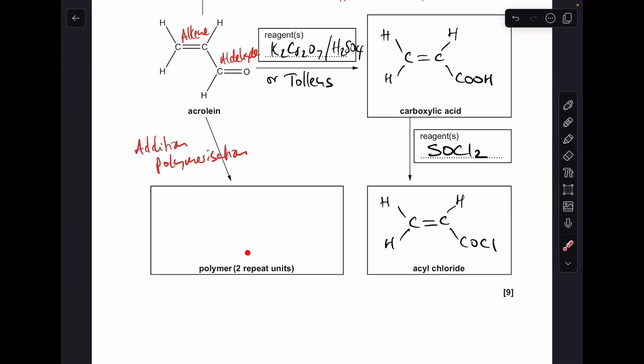And now finishing with this conversion here. Acrolein to the polymer shown, two repeat units. You'll notice I've written up addition polymerization. And that's because we've got the alkene functional group. So the C-C double bond is going to open up and we're going to add, in this case, two monomers together to give two repeat units.